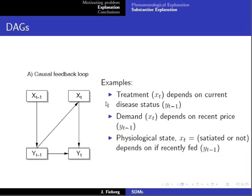However, there are plenty of applications where this sort of model makes sense. In the medical literature, treatments are often prescribed depending on current or previous disease status. In the economics literature, demand for consumer goods often depends on recent price. And in the behavioral literature, there are models, for example, of feeding activity that depend on physiological state variables that represent whether an individual is satiated or not.